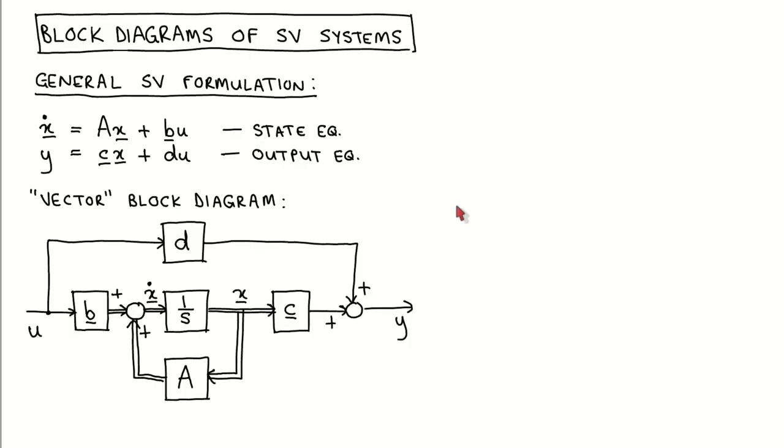The block diagrams we use only consist of integration, summation and gain blocks. It is important to understand that a block diagram is an equivalent representation of the system dynamics to the state variable equations. We can therefore go from one representation to the other without losing information.